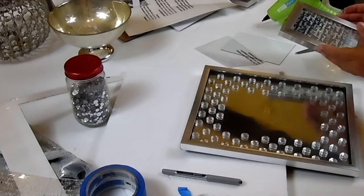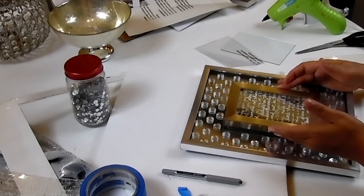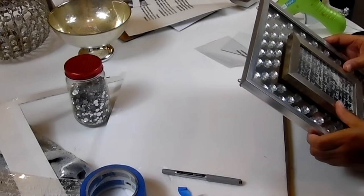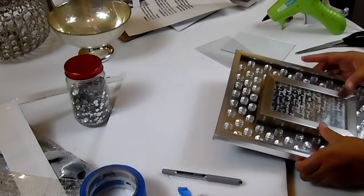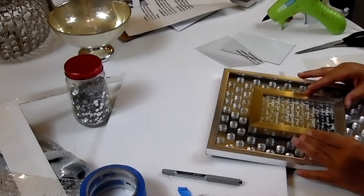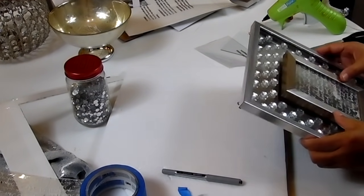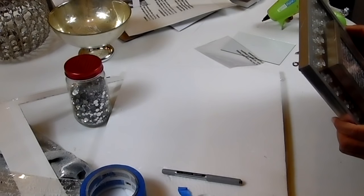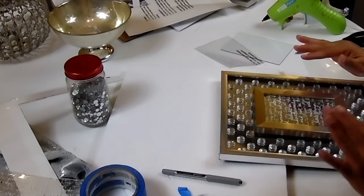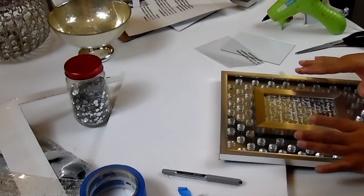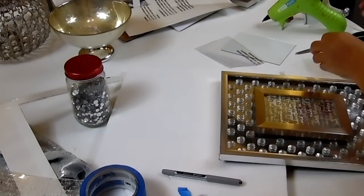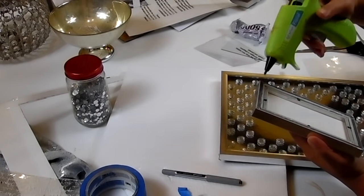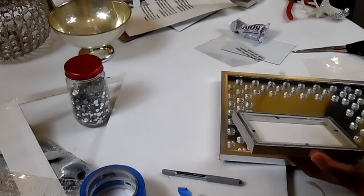So now what I want to do is just go ahead and add some glue just to make sure it's sealed. So now that that's done, let's go ahead and just pop this in place to see where we need to glue it. All right, so I think I want to go ahead and add some E6000 to this to make sure that it stays bonded. And I'm going to add some hot glue just to keep it in place while it sets up.